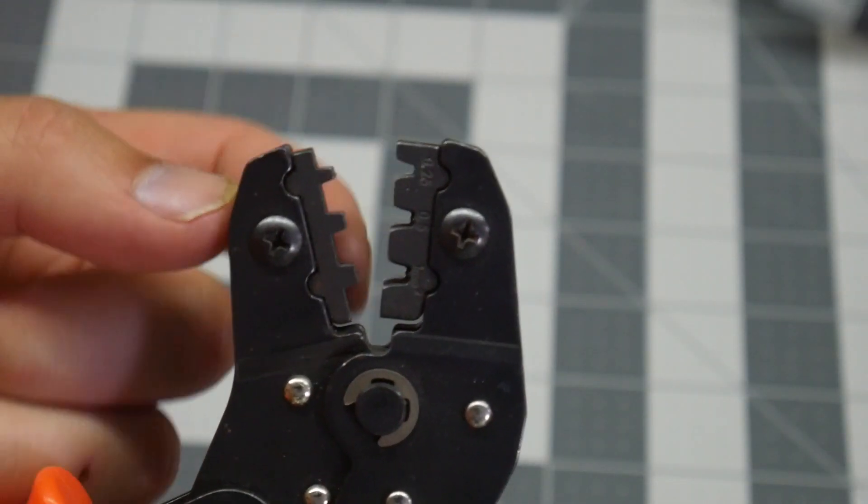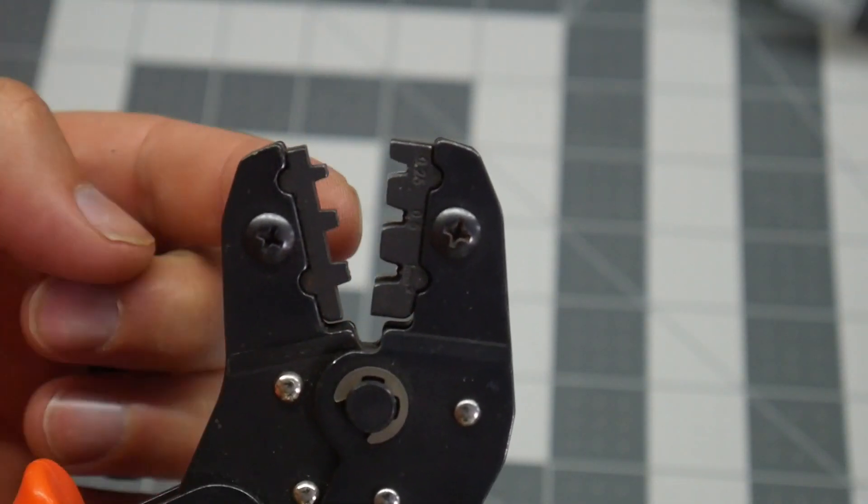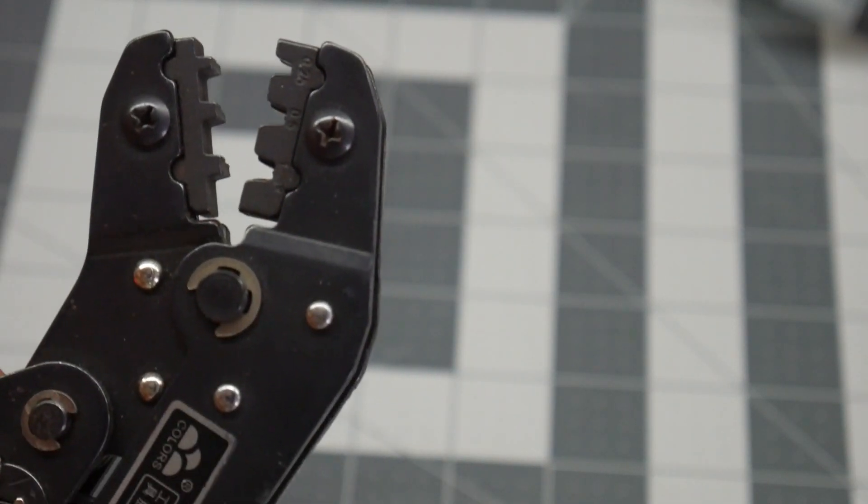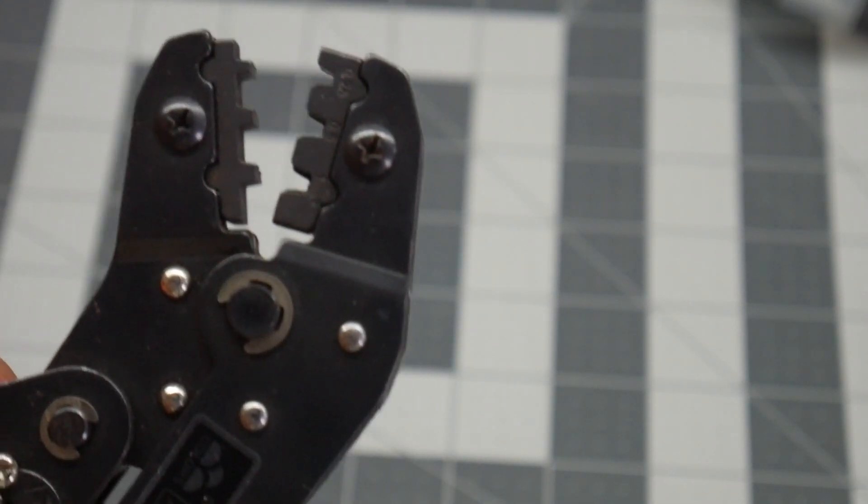We have three different sizes here for these cables. I generally will use the middle and then go to the small one, but it depends on how small the wire is that I'm going to crimp.